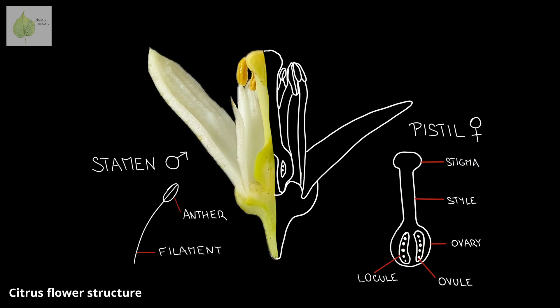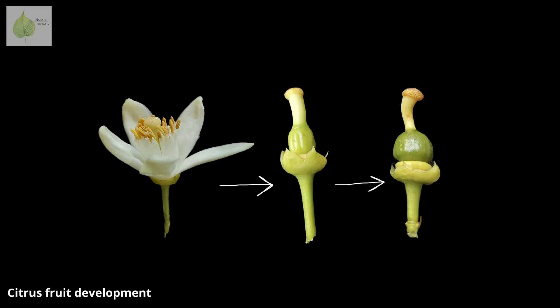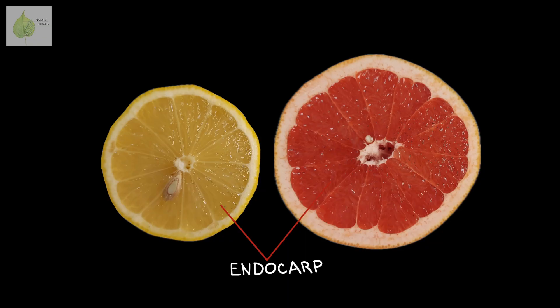The number of segments is given by the number of locules in the female reproductive part of the flower. The locules are located in the ovary, whose walls develop into a three-layered pericarp. The pericarp layers in a citrus fruit are clearly visible. The endocarp layer is the innermost layer that immediately surrounds the seed — that's basically our citrus pulp, the juice vesicles.